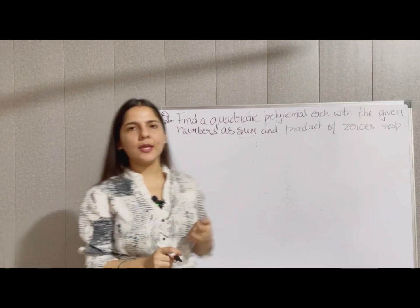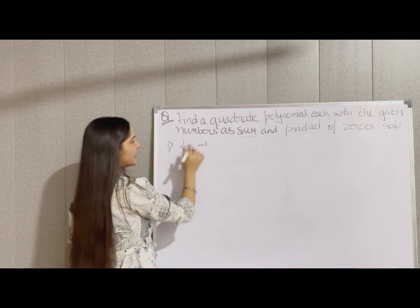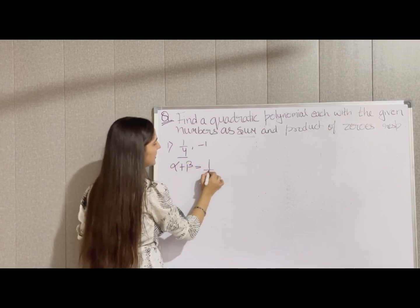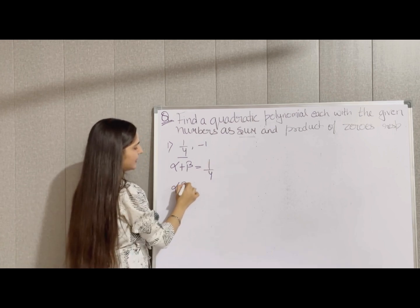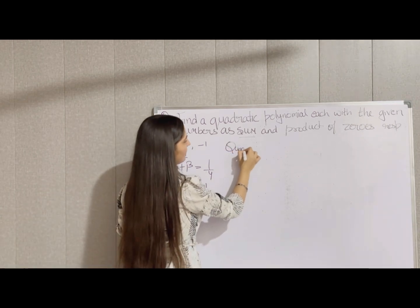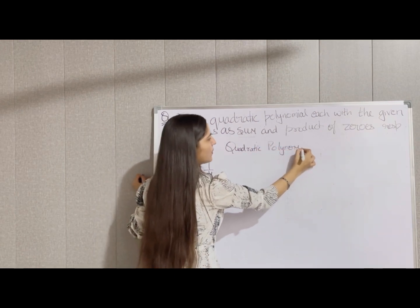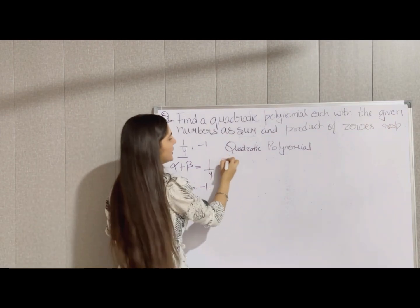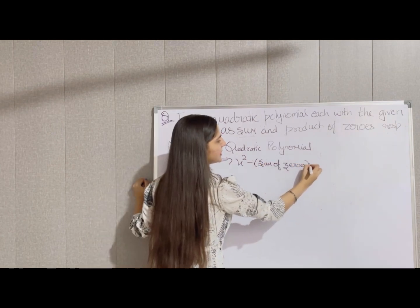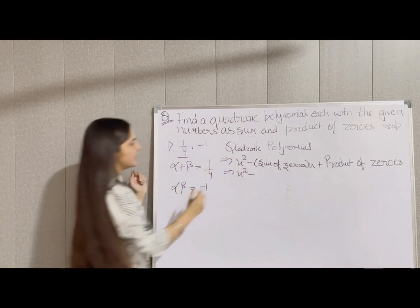So what is given in the question? Sum and product are given. For the first part, sum of zeros (alpha + beta) is 1/4, and product of zeros (alpha × beta) is -1. We need to find the quadratic polynomial.